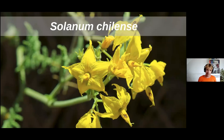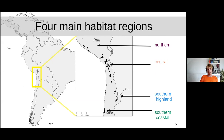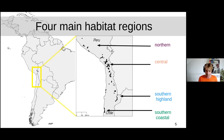Solanum chilense is one of the southernmost wild tomato species. We can roughly divide its habitat into four main regions. The largest is the central region on the border between Peru and Chile, thought to be the center of origin. From there, populations migrated south — either along an inland track at high altitudes, or to the southern coast at very low altitudes. These two are separated by the Atacama Desert, and some populations must have migrated back north.